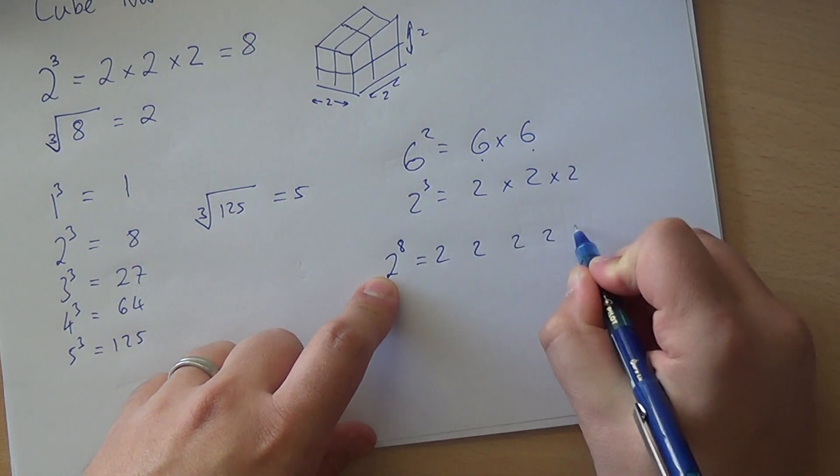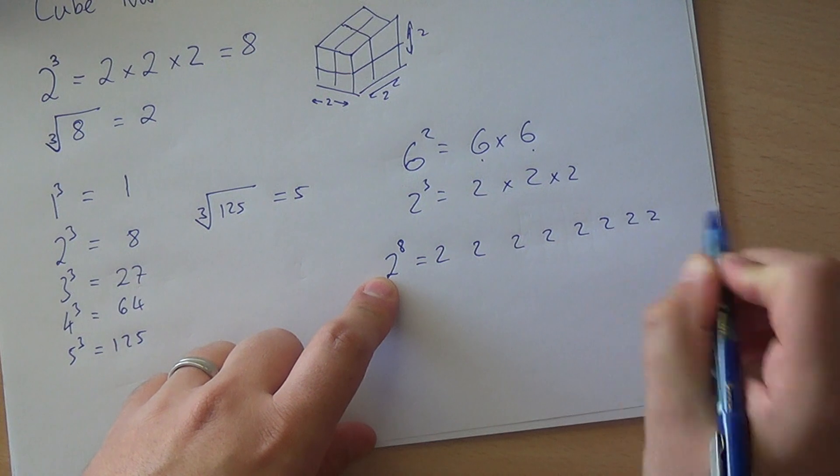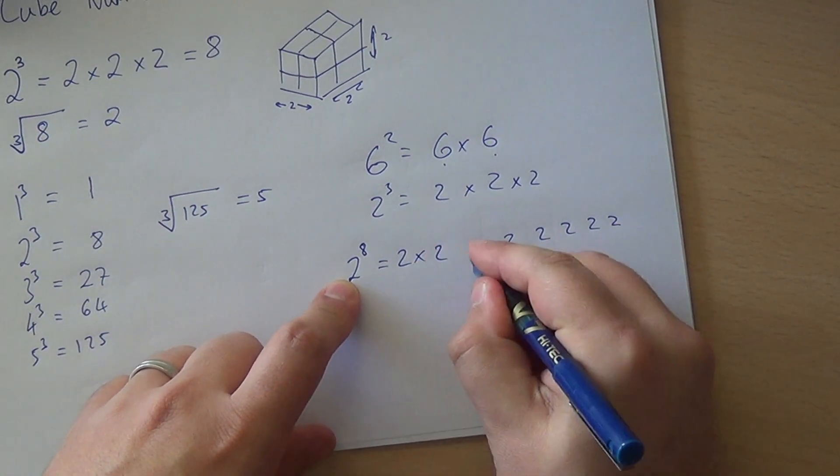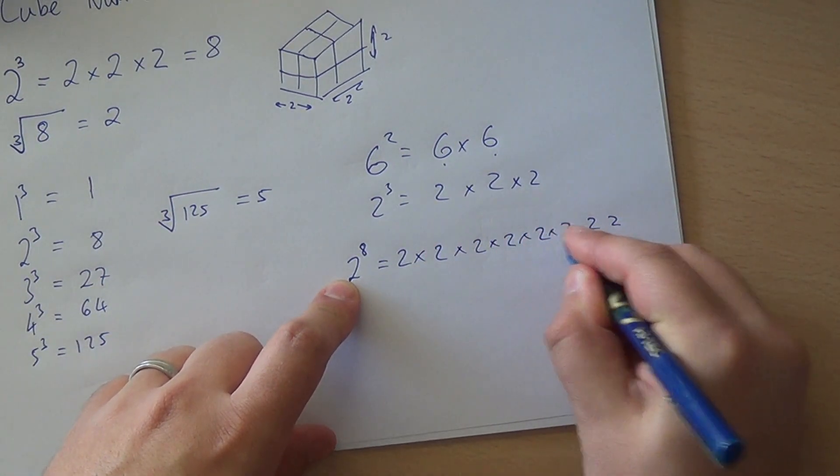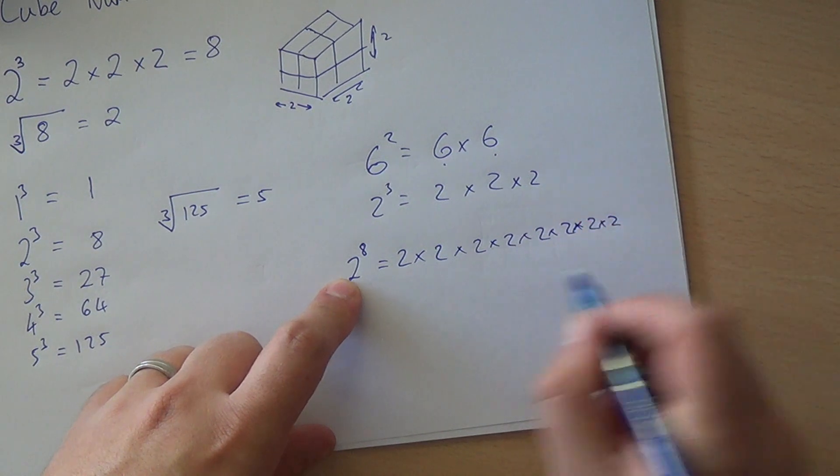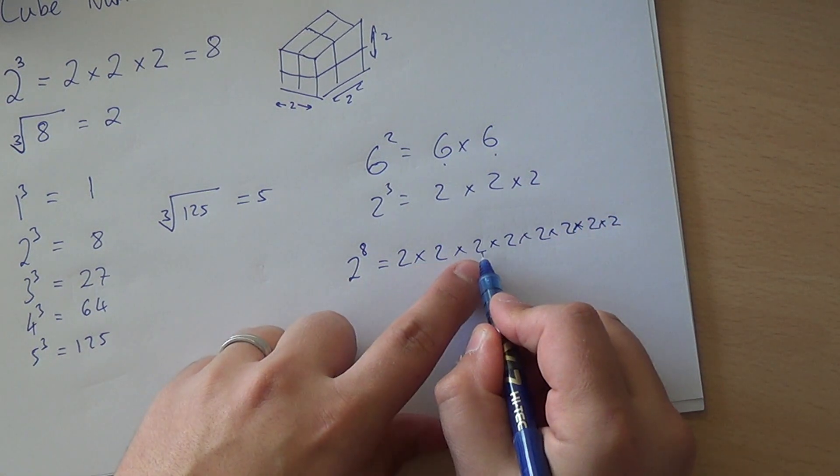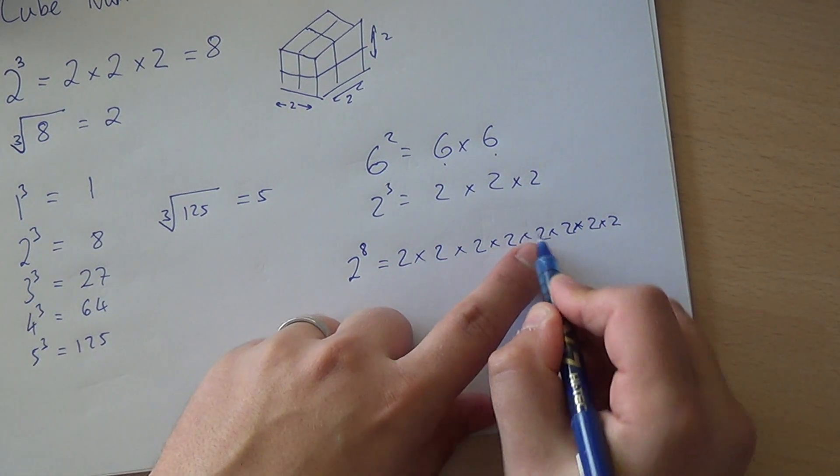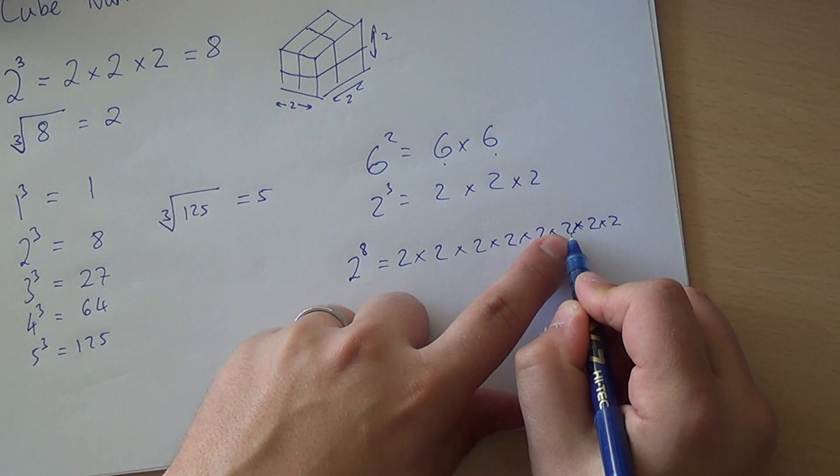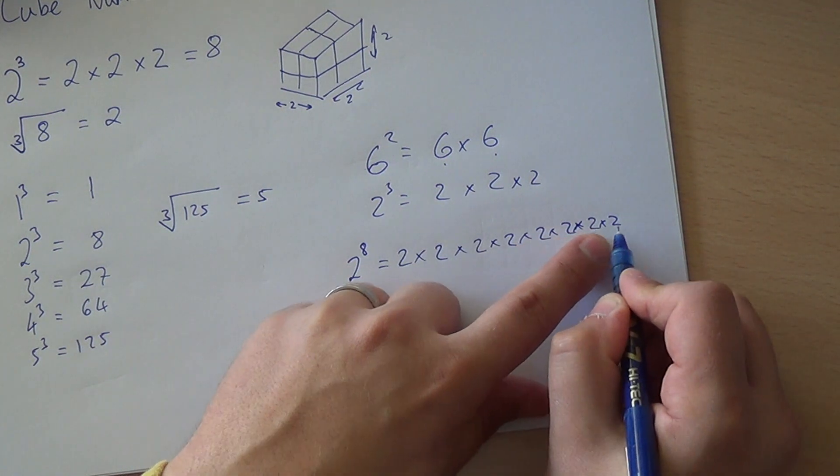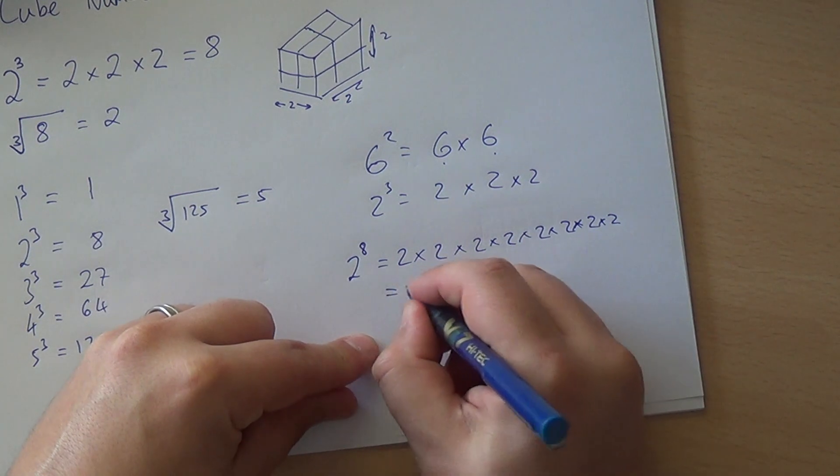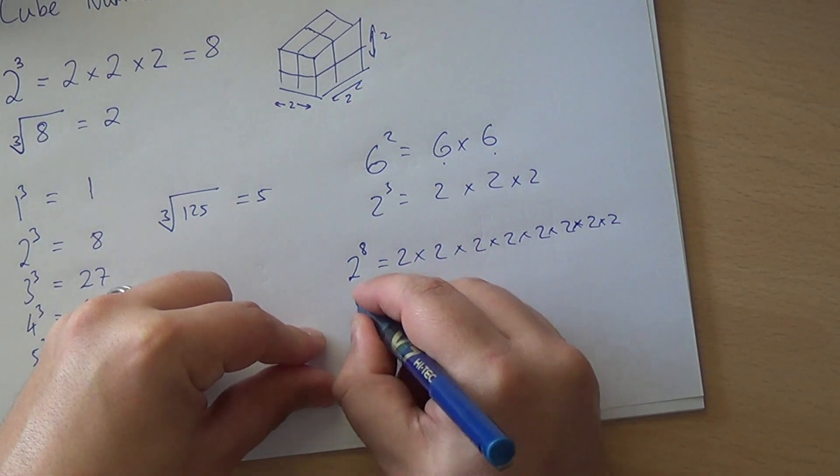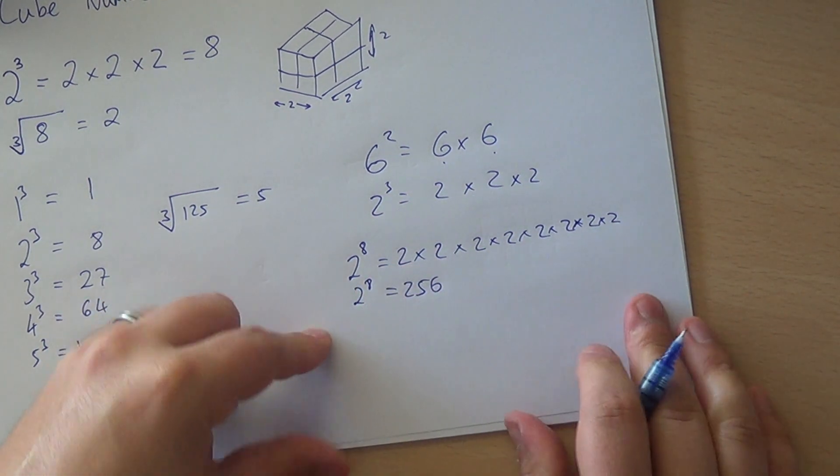That's 8 twos all multiplied together: 2, 3, 4, 5, 6, 7, 8. And if we take care, we can work this out. 2 times 2 is 4, times 2 is 8, times 2 is 16, times 2 is 32, times 2 is 64, times 2 is 128, times 2 again is 256. So 2 to the 8 is 256.